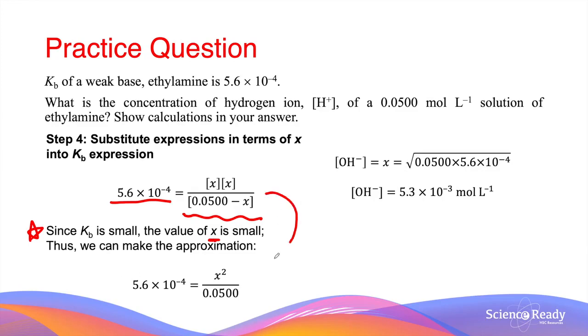We can make the approximation by removing minus x in the denominator. This allows us to multiply 0.05 on both sides and subsequently square root both sides. This allows us to calculate the value of x, which is the hydroxide ion concentration: 5.3 times 10 to the minus 3 mol per liter.